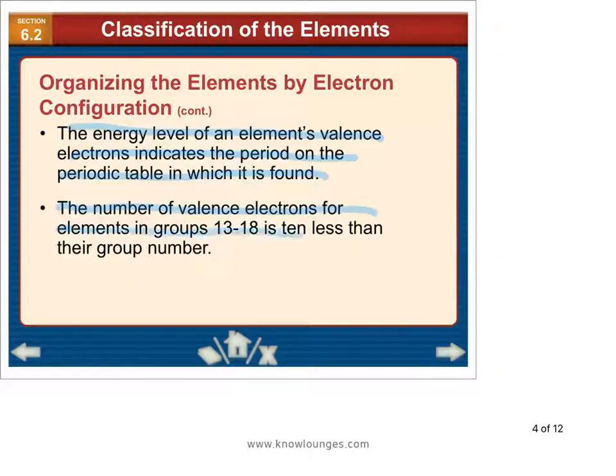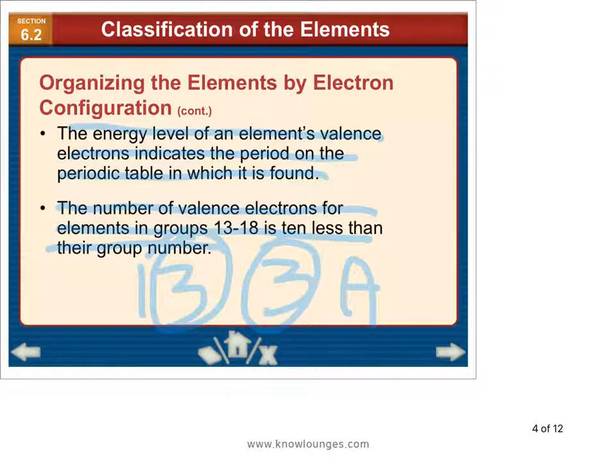As you get out to groups 13 through 18, it's 10 less than the group number. This will be on the A system on periodic tables. Group 13 is group 3A and there are three valence electrons. And that process repeats as we move on through 14, 15 and so forth.